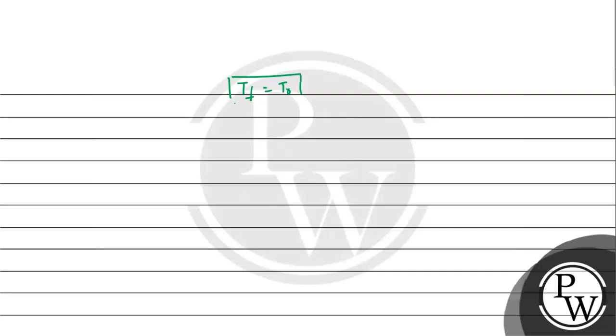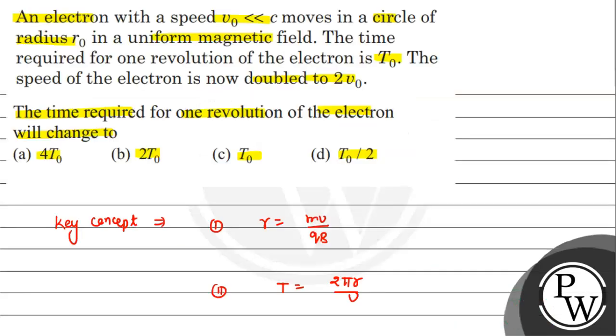This equals T0. The final time period equals T0. The time period remains the same. Check the options - option C is correct. Hope you understood it well, all the best.